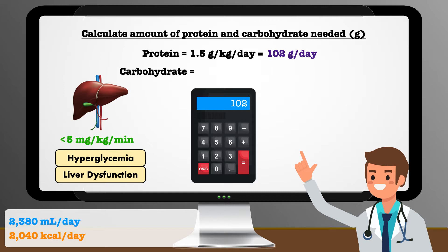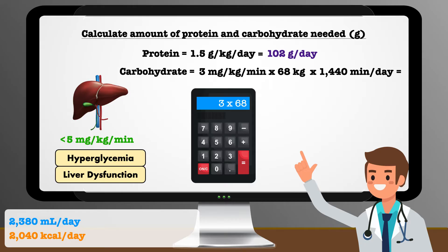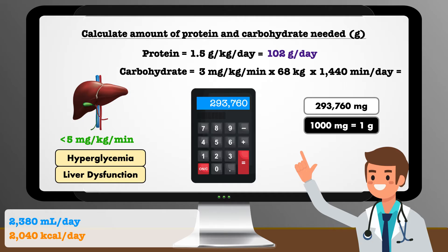In my professional experience, I have found a safe place to start is right around 3 mg per kg per minute. From here, we can calculate how many grams to give each day. We multiply the glucose infusion rate of 3 by 68 kg, then multiply that result by the number of minutes in a day, which is 1,440. This leaves us with 293,760 mg per day. Since there are 1,000 mg in 1 gram, we divide by 1,000 and end up with approximately 294 grams per day.